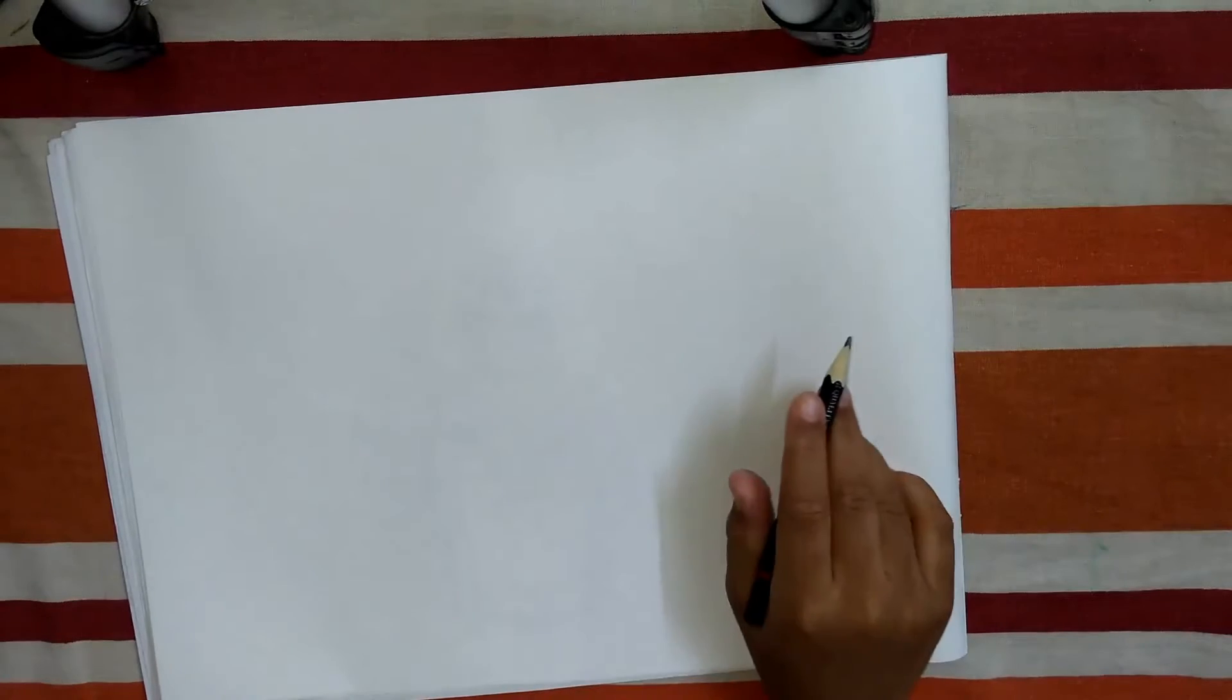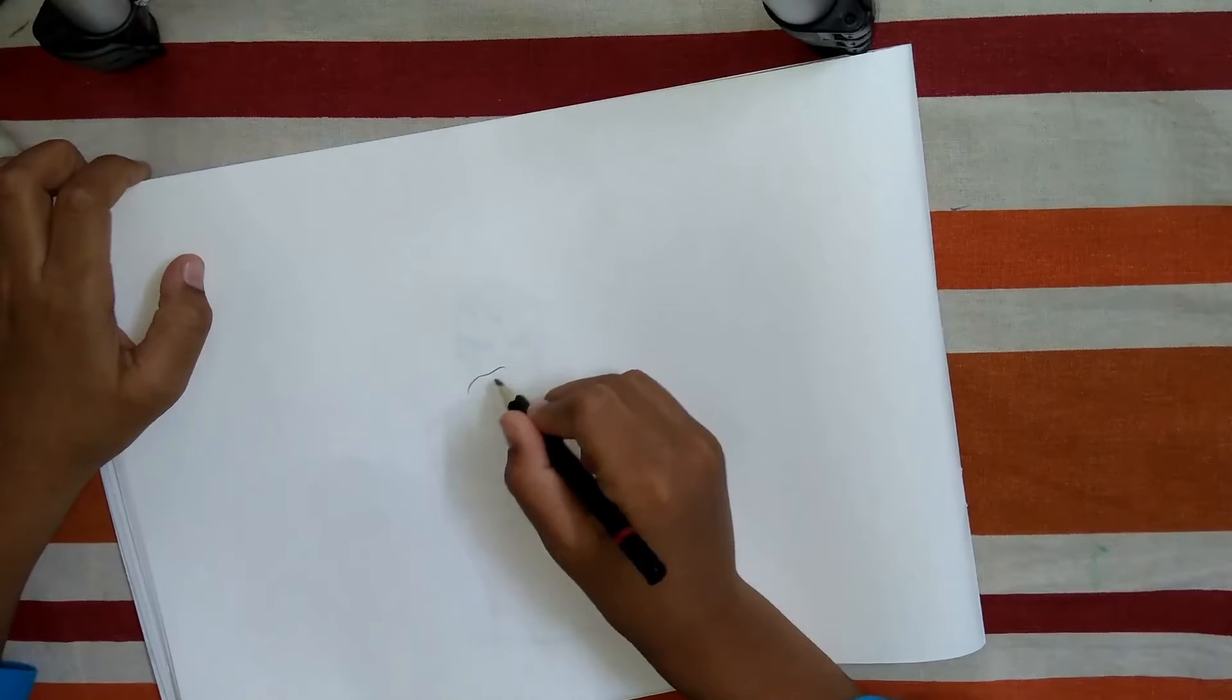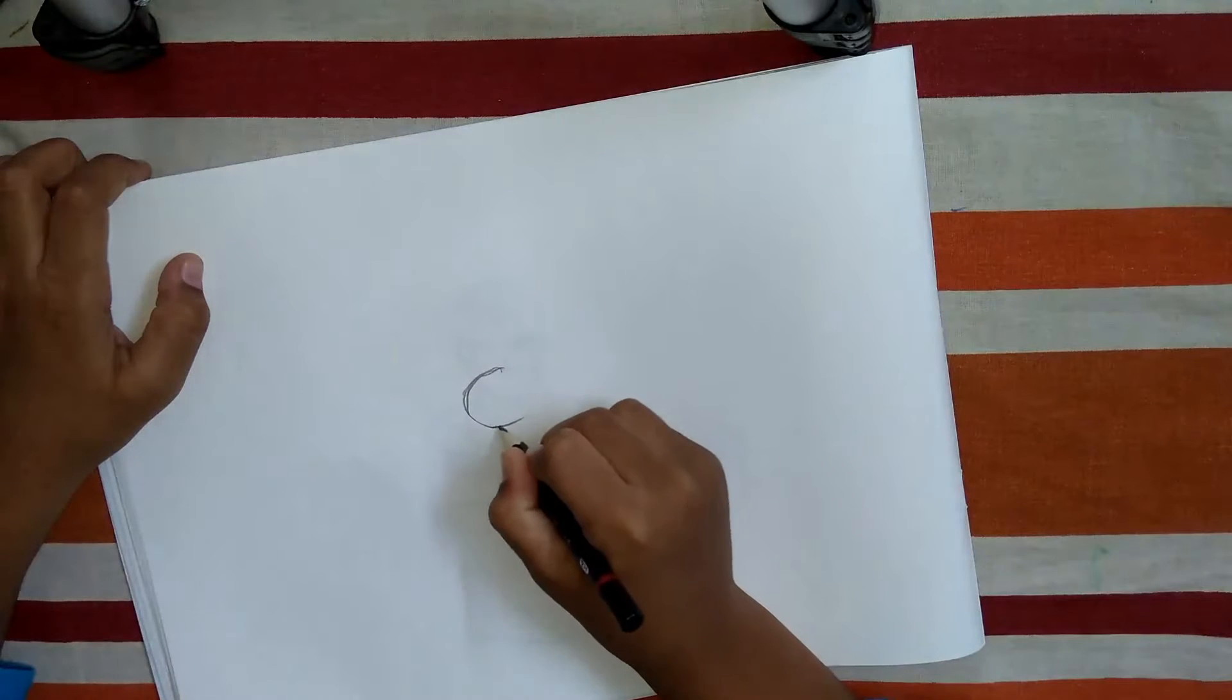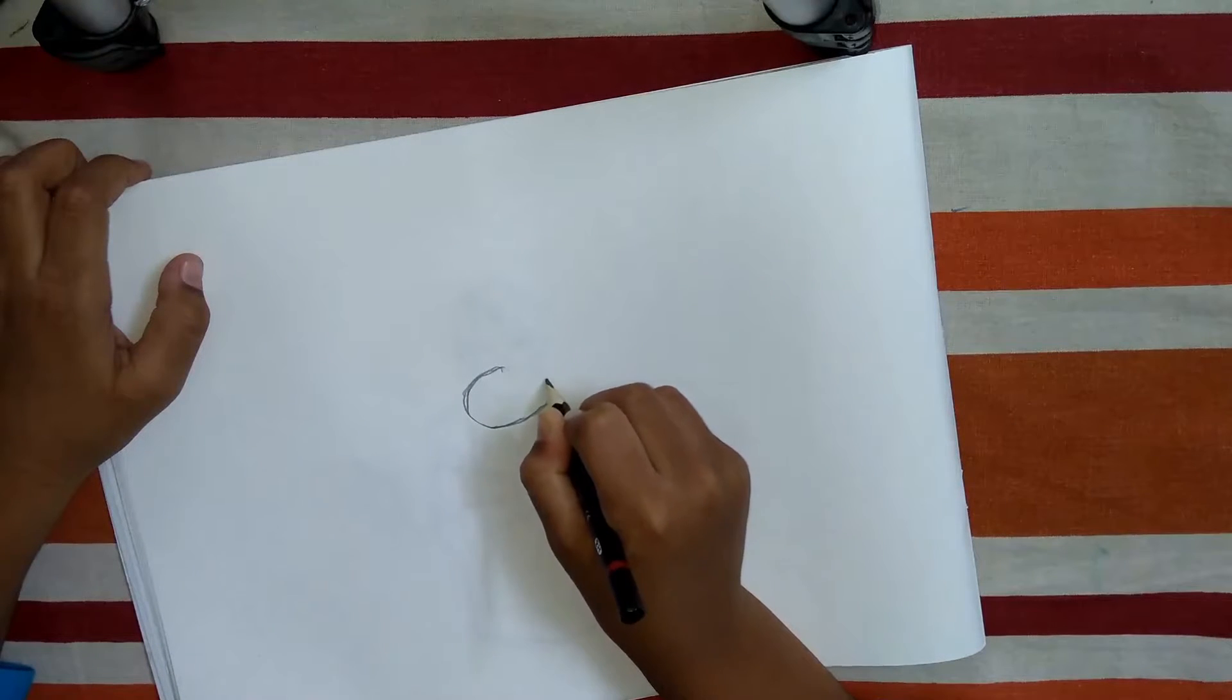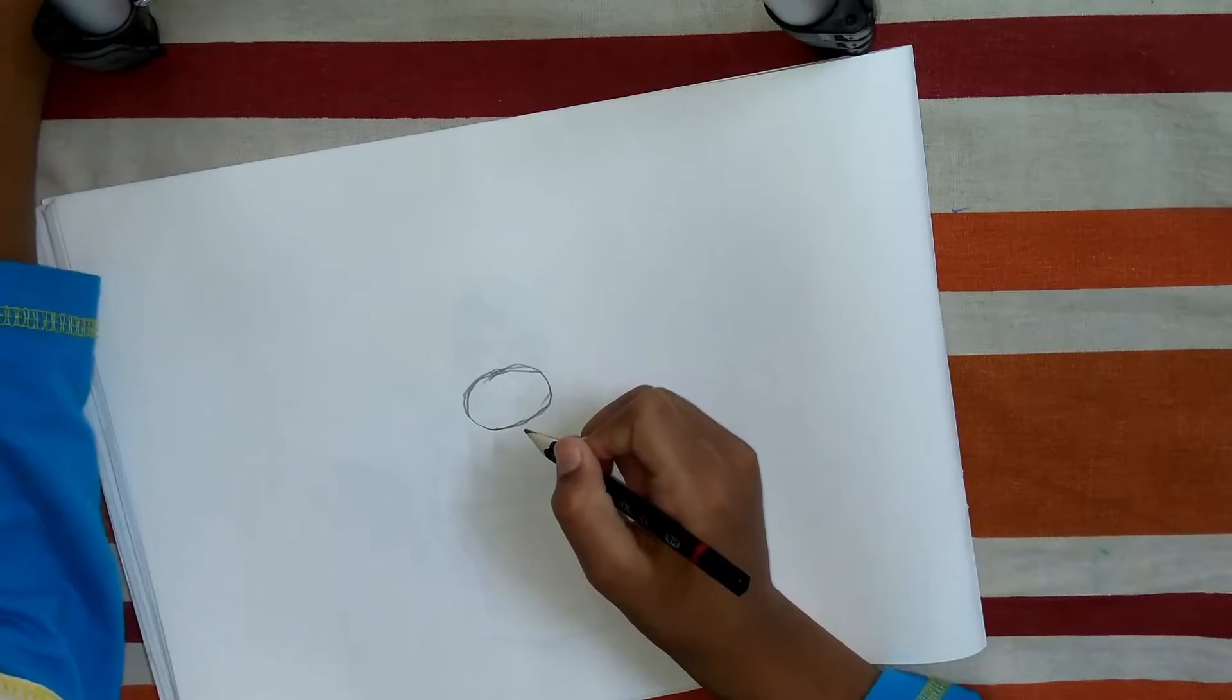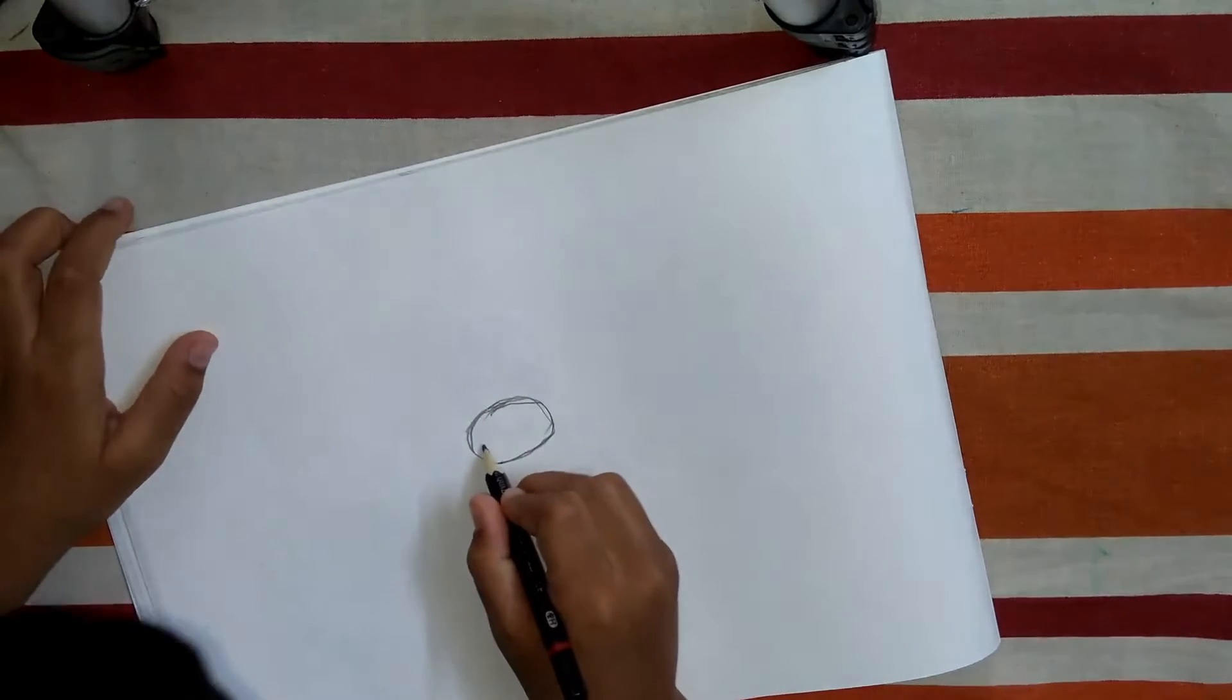Hey guys, welcome back to my channel. Today we are going to draw crewmates and imposters from Among Us. Let's start with the Flash crewmate. Draw a shape like this, and then you need to draw from here first.